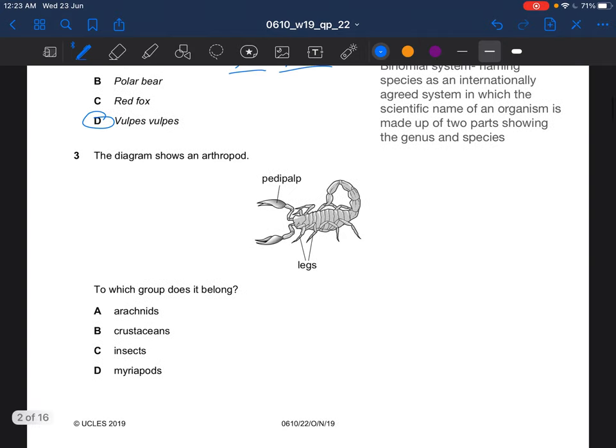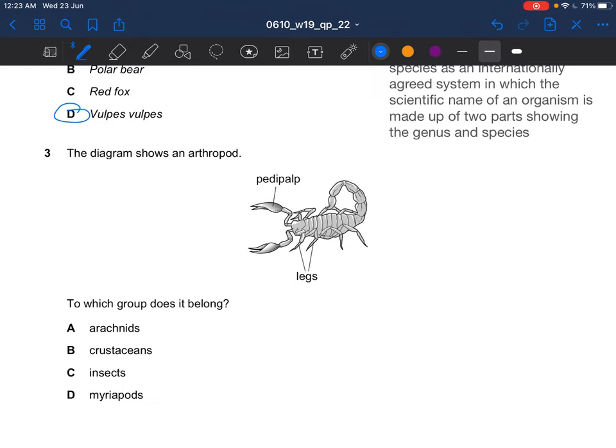Next question, the diagram shows an arthropod. To which group does it belong? This arthropod has 1, 2, 3, 4 pairs of legs. So it would be arachnids. They have 4 pairs. Crustaceans have 5 pairs, insects have 3 pairs. Myriapod depends on how many segments it has. So the answer for question 3 would be A.